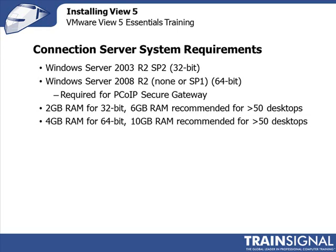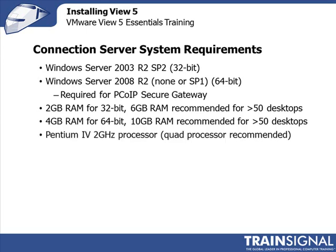When it comes to memory system requirements, you have a 2-gigabyte minimum for 32-bit operating systems or a 4-gigabyte minimum for 64-bit. If you're going to scale beyond 50 desktops, you need 6 gigabytes of RAM or higher for 32-bit, and 10 gigabytes or higher for 64-bit. For our lab environment we'll be fine, but you can always start small and add more as needed.